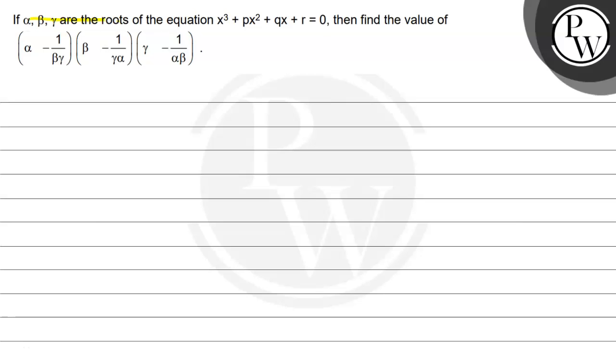The question says, if alpha, beta, gamma are the roots of the equation x cubed plus px square plus qx plus r equal to 0, then find the value of alpha minus 1 divided by beta gamma, beta minus 1 divided by alpha gamma, gamma minus 1 divided by alpha beta.